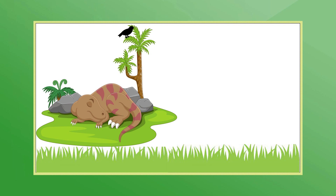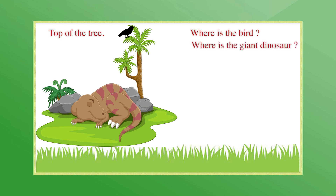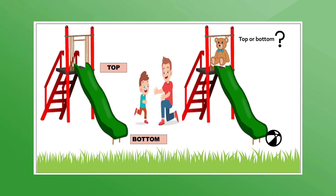Did you enjoy the story? Do you notice the tree — and isn't there a bird also? Where is the bird sitting? The bird is sitting on the top of the tree. And where is the giant dinosaur sleeping? The dinosaur is sleeping at the bottom of the tree. So the highest position is called the top, and the lowest position is called the bottom.